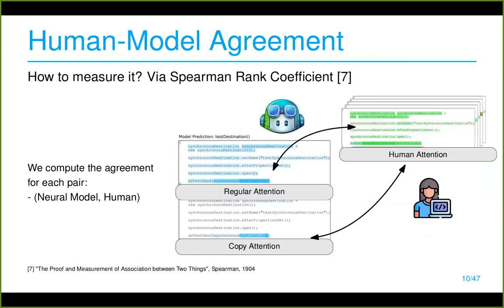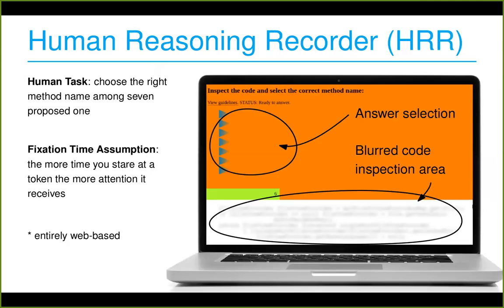Question: One immediate concern is that people might give more attention not to the most important tokens but to the ones hardest to read — for example, in Java with camelCase, very long method names of six sub-words. People could get stuck figuring out a complex method name even though they didn't really focus on it intentionally. Did you have any way to account for that?